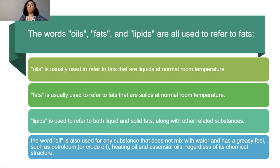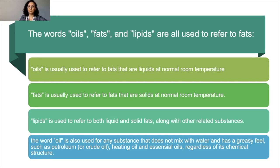The words oil, fats, and lipids are all used to refer to fats, but there are some differences. Oils is usually used to refer to fats that are liquid at normal room temperature. Fats is usually used to refer to fats that are solid at normal room temperature. Lipids is used to refer to both liquid and solid fats along with other related substances. The word oil is also used for any substance that does not mix with water and has a greasy feel, such as petroleum or crude oil, heating oil, and essential oils, regardless of its chemical structure.